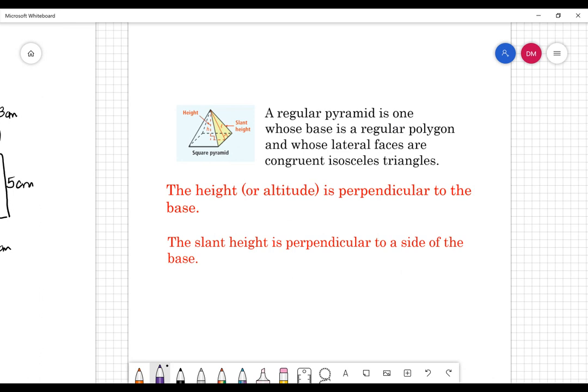Now one other figure that you saw on yesterday's assignment was a pyramid. So a couple notes here about pyramids. We want to make sure that we know which type of height we're talking about here. So a regular pyramid is one whose base is a regular polygon.